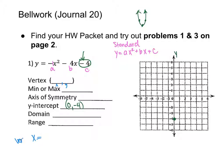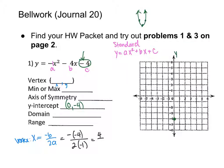To find the vertex, find x using the formula x = −b / 2a, where b and a are the coefficients in the equation. Plugging in: b is negative four and a is negative one, so this is −(−4) / (2 × −1), which gives positive four over negative two, which equals negative two. So x equals negative two.